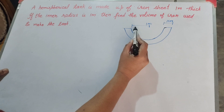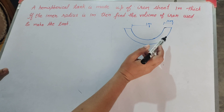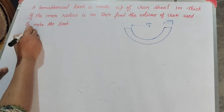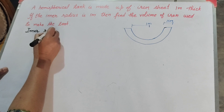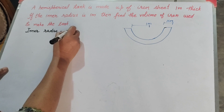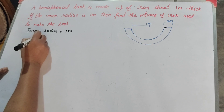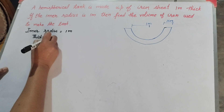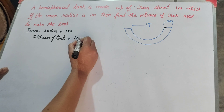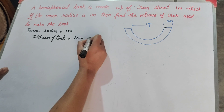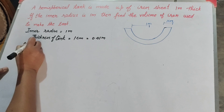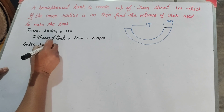Given: the inner radius is equal to 1 meter. The thickness of the tank is equal to 1 centimeter. We change this centimeter into meters by dividing by 100, so it is 0.01 meter.